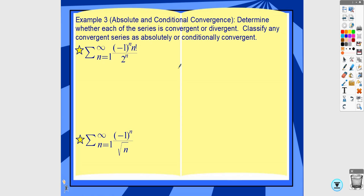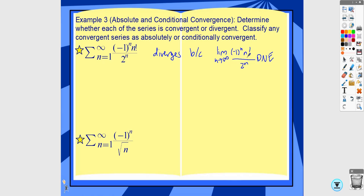This example asks whether the series is convergent or divergent, and if convergent, whether conditionally or absolutely. This one actually diverges. The limit as n approaches infinity of (negative one to the n) times n factorial over 2 to the n does not exist — n factorial grows faster than 2 to the n, so the non-alternating limit goes to infinity, meaning the series alternates between very large positive and negative values. Since it diverges, we don't need to check conditional versus absolute.